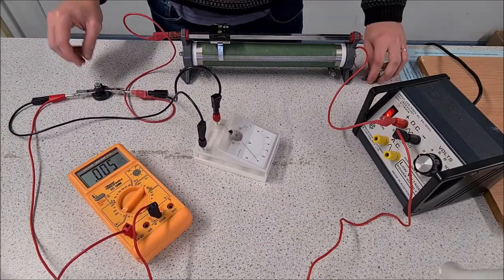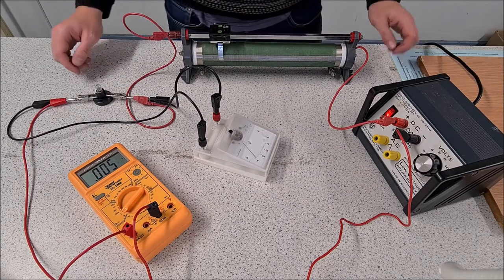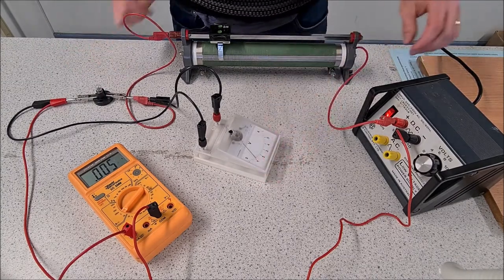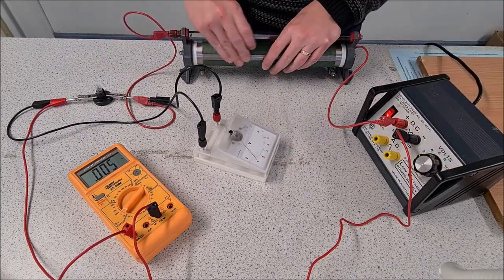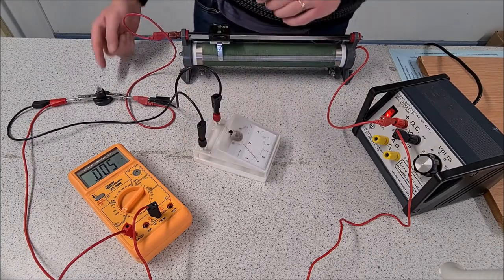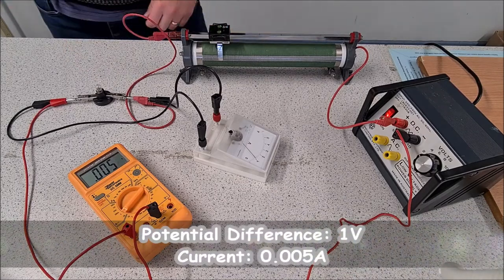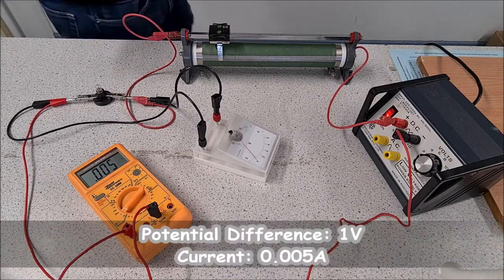So for the filament bulb, we're going to use the digital multimeter just to get a more accurate reading of the current, so I'm going to set the potential difference to 1 volt on my voltmeter. You can see the bulb is barely on, and my current is 0.005 amps.